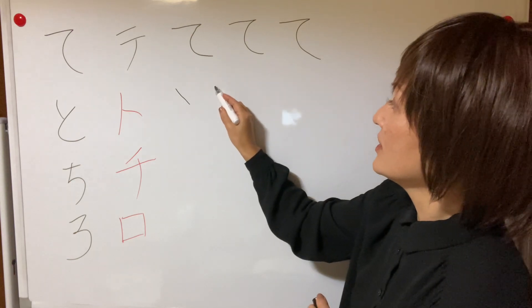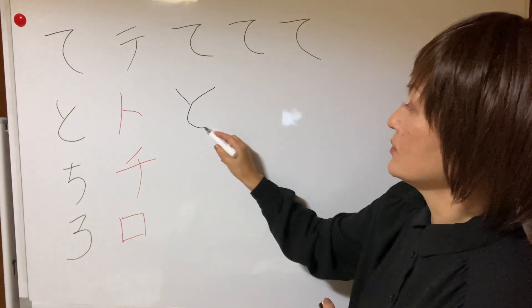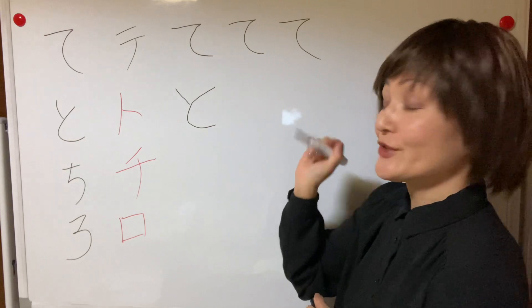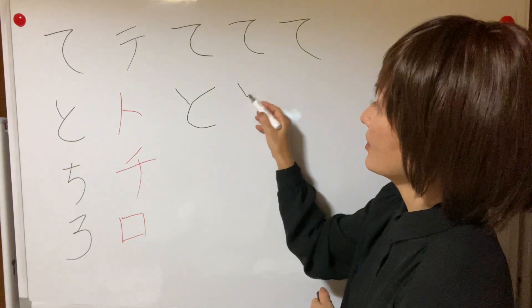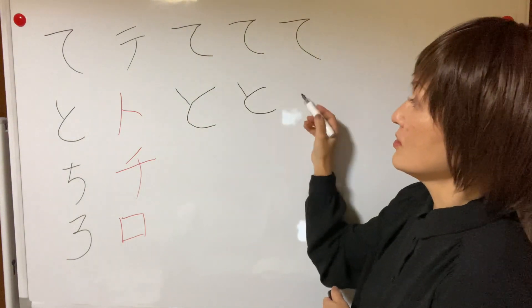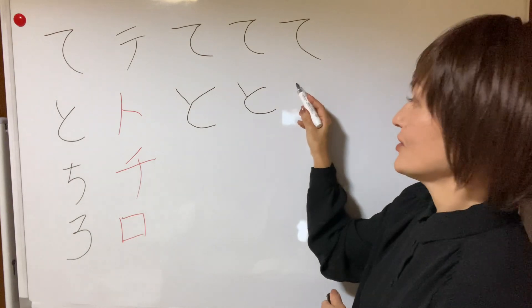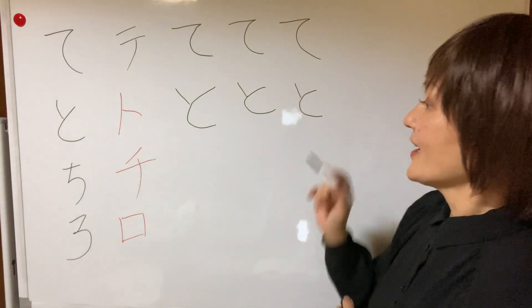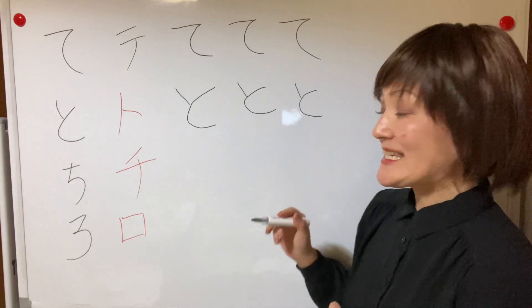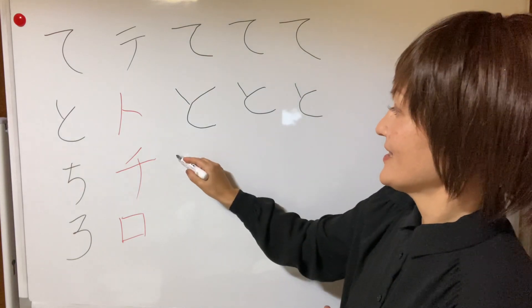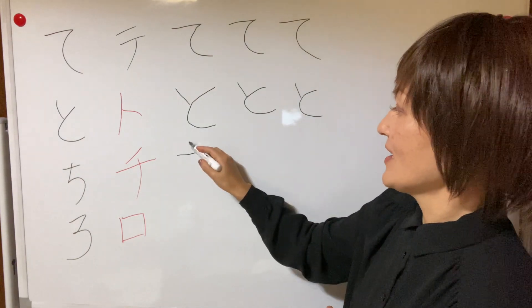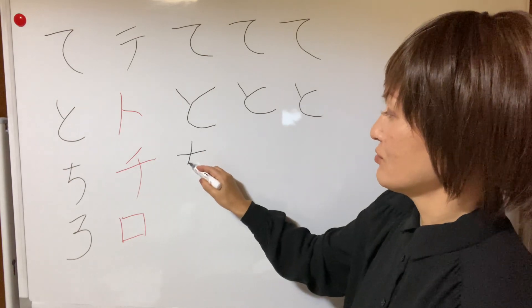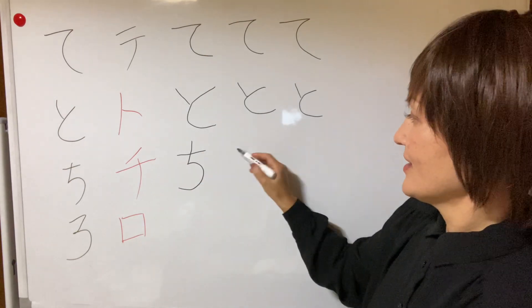Higher to lower and higher to lower, two strokes. To, to, to. Okay, next one is chi. Chi, left to right, one stroke here. Okay, chi.